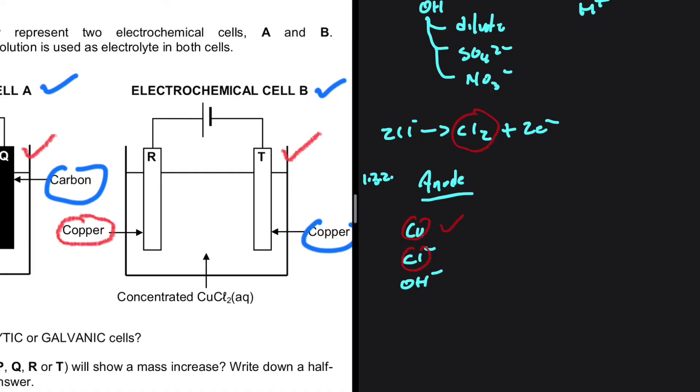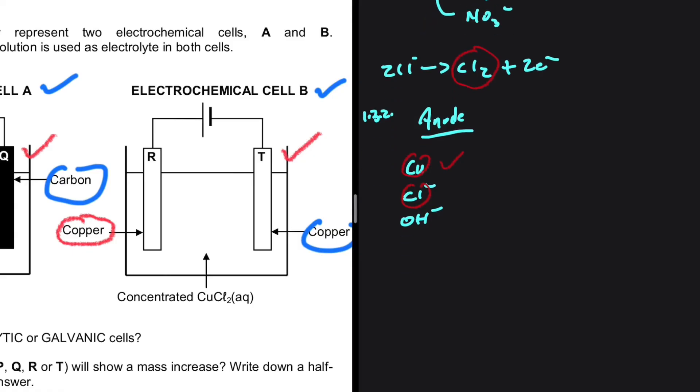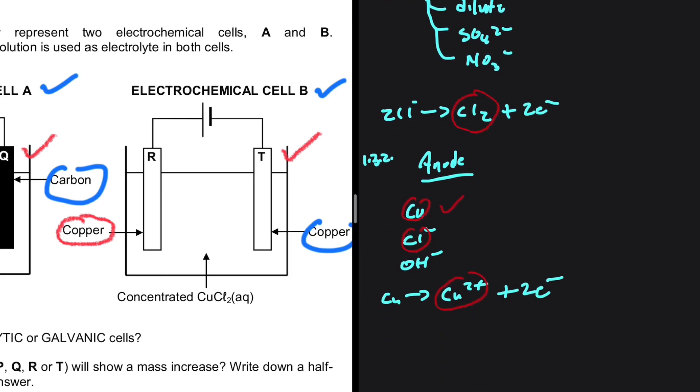Copper is a stronger reducing agent compared to Cl minus. So copper will get oxidized. We're going to have copper getting oxidized to form copper 2 plus plus 2 electrons. So the product at electrode R is actually copper 2 plus and not chlorine.